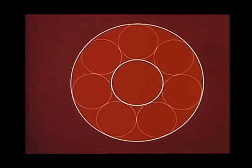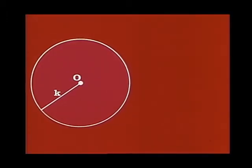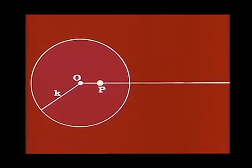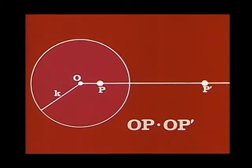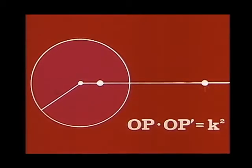This mapping is called inversion. Inversion is a mapping determined by a fixed circle, whose center is called the center of inversion. For any point P other than this center, there is on line OP a unique image point P', located so that the length OP times the length OP' equals the square of the radius of the circle. P is also the image of P', and each of these points is called the inverse of the other.